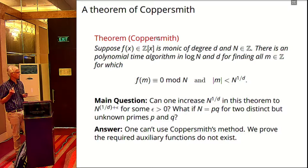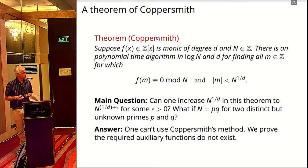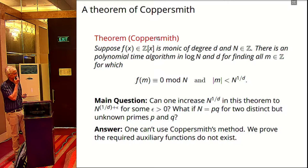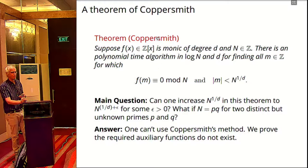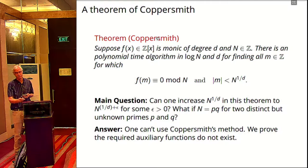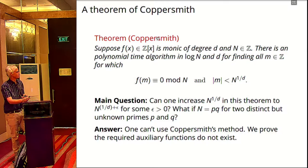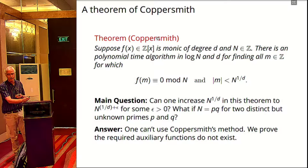By now, this is a fairly famous theorem. Since Coppersmith first proved it, there's been a question about whether you can improve the upper bound on the size of M — specifically, whether you can increase N^(1/D) to something like N^(1/D + ε) for some positive ε. It's not hard to prove that if N is a big power of a single prime, there's no way to do this improvement. But it was an open question: what if you have an RSA modulus, a product of two distinct large primes? Coppersmith made some speculations in his first paper about possible methods, but it's been kind of open for 20 years. The main thing we found was that actually there's no hope — the auxiliary polynomials of the shape he looks for simply don't exist. We can prove they don't exist.